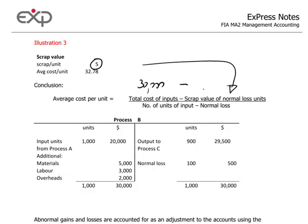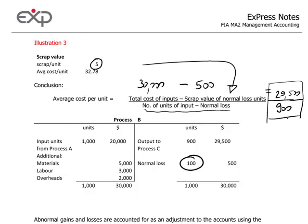Let's do that calculation. $30,000 is our total cost of inputs minus scrap value of normal loss inputs. We have 100 normal loss units, so times 5 will be 500. This gives us in the numerator $29,500. In the denominator we have 1,000 units of input minus the normal loss of 100, 900 units. The value of our good output, the 900 units, will be $29,500 divided by 900, or $32.78.